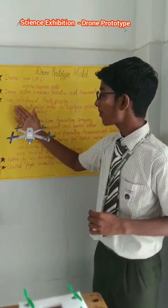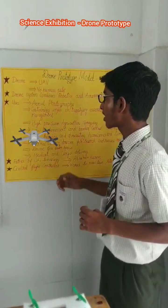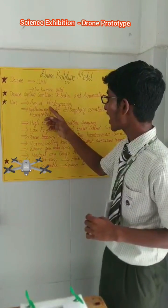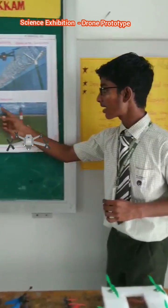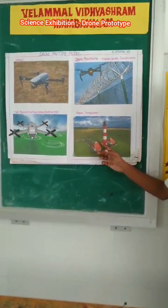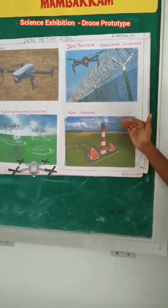So now I am going to explain about the uses of UAVs, that is unmanned aerial vehicles. The first is aerial photography. As you can see here, this is an aerial photograph taken by the drone from 30 minutes above the sky.